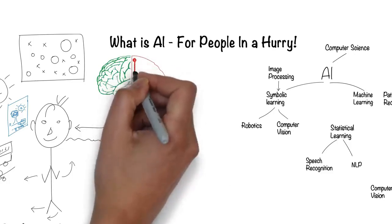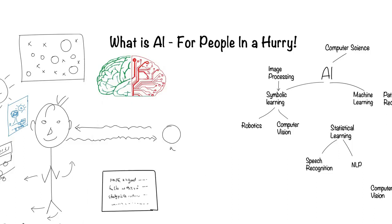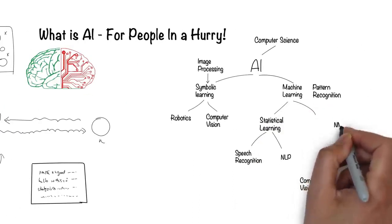If we can replicate the structure and function of the human brain, we might be able to get cognitive capabilities in machines. This is the field of neural networks.